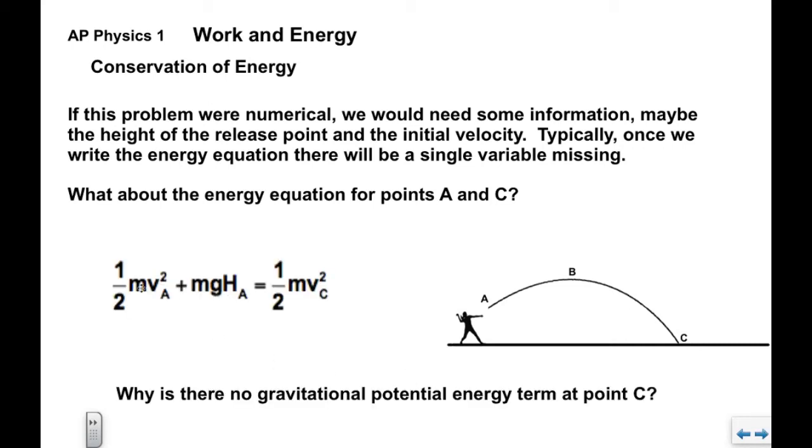Now what if we looked at this problem between points A and C? We still have the same total energy at point A. There's energy at A. The energy at C is represented by only kinetic energy. And we see that as it lands, it has now reached the h0, which means it's not elevated. So there's no gravitational potential at that point, which is why we have only kinetic.